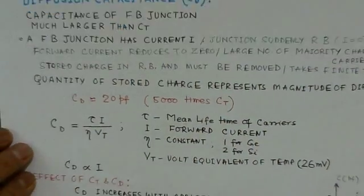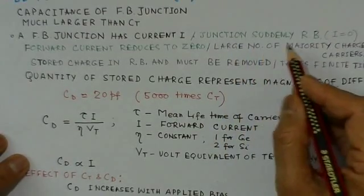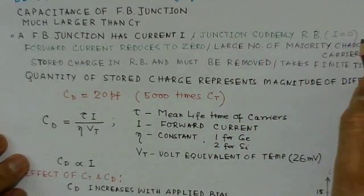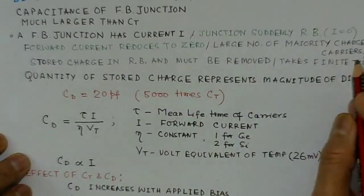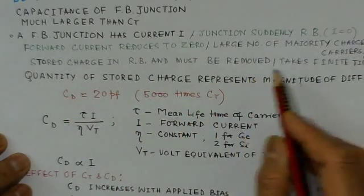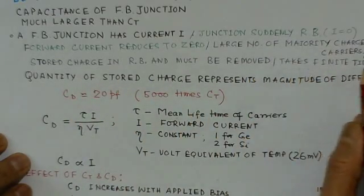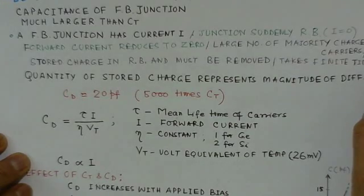Anyway, we have summarized here. We said when the junction is suddenly reverse biased, the current becomes zero. Forward current reduces to zero. Large number of majority charge carriers are present and they recombine. And so charge in reverse bias must be removed. And it takes finite time, and this finite time taken gives rise to the capacitive effect.